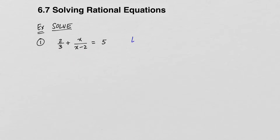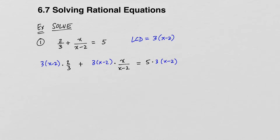We have talked about this already. The least common denominator in this equation is 3 times x minus 2. When you're solving an equation, you have an advantage over simplifying expressions: we can multiply both sides of the equation by the least common denominator. This is the technique we're going to use. When we multiply both sides by the LCD, we get this, and now we can cancel common factors. Keep in mind, when you multiply, you can always think of that as a fraction, and we're going to identify common factors to cross-cancel.